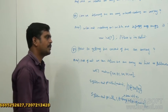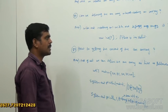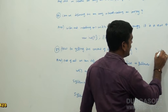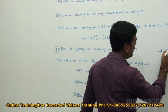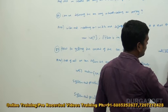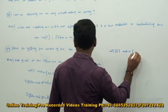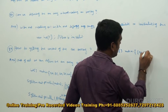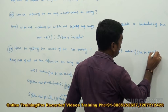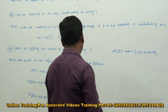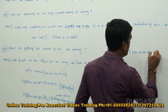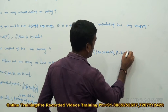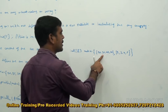Next, how to define a two-dimensional array? This is a 2D array. We can define it like this: int matrix[][] = {{20, 30, 40, 50}, {2, 3, 4, 5}}. This first one is the first matrix, and this is the second one.